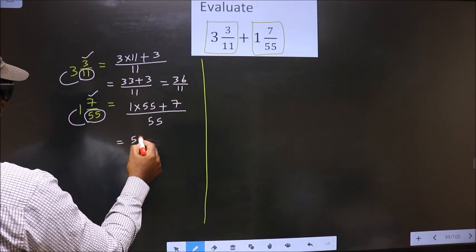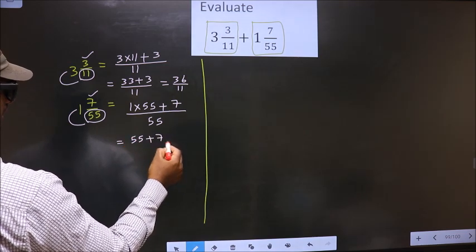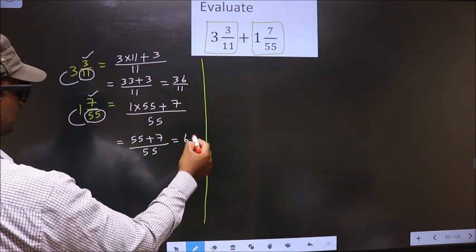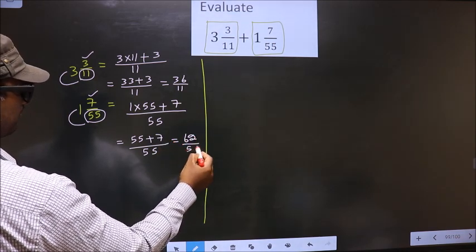So, 1 into 55, 55 plus 7 by 55. So, this is 62 by 55.